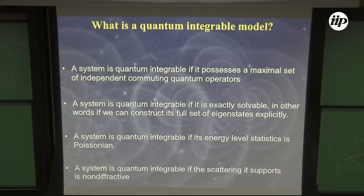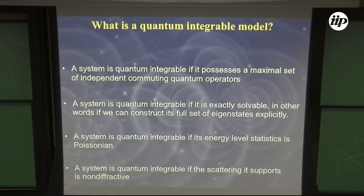Finally, a system is declared quantum integrable if the scattering is non-diffractive: the excitations move and scatter, and you declare a system quantum integrable if the spectrum is not diffracted. This is the criterion I'm going to use in this lecture to pin down the possible integrable models.